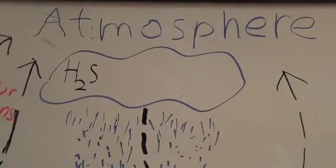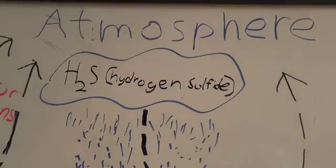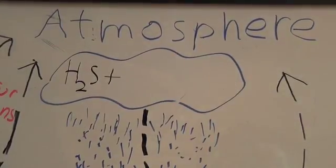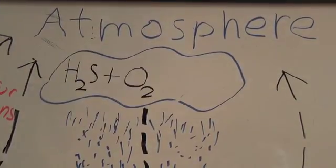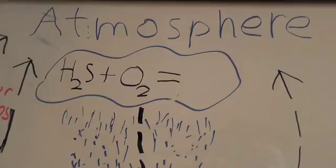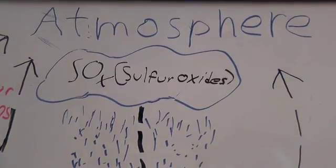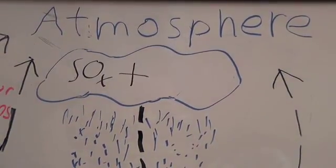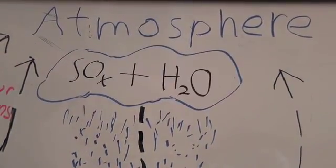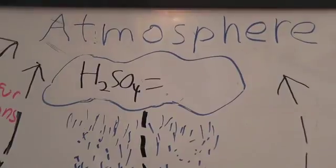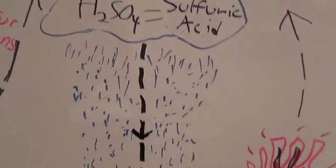What are the chemical reactions that take place in the atmosphere that are involved with the sulfur cycle? When sulfur enters the atmosphere, hydrogen sulfide reacts with oxygen. The reaction forms sulfur oxides. Sulfur oxides react with the water in the atmosphere to form sulfuric acid, a large organic reservoir of it, which falls back down to the earth.